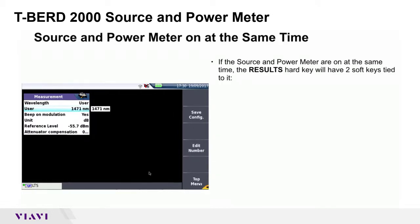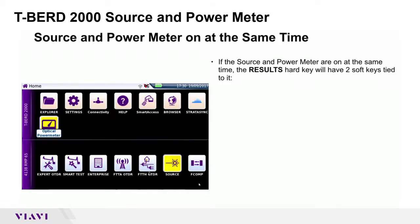If the source and power meter are ON at the same time, the Results hard key will have two soft keys tied to it: Source Config and Power Config.